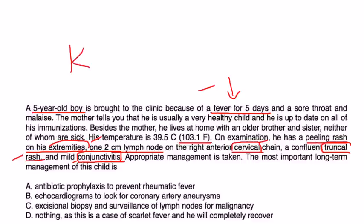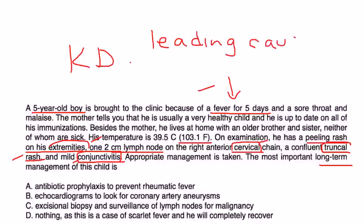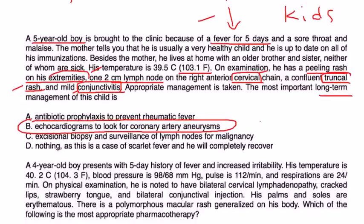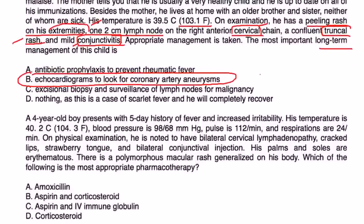The question asks about the most important long-term management. Kawasaki disease is the leading cause of heart disease in kids, so you need cardiac testing. The key test is an echocardiogram, used to detect coronary artery aneurysms. That would be choice B.